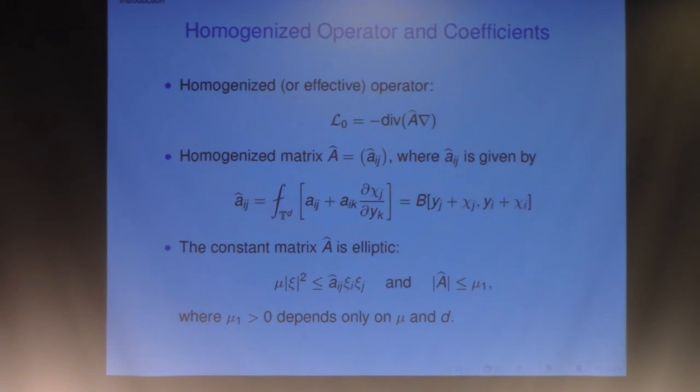You can see the coefficient for L_0 is not a simple average of the coefficient for L_y, but rather it's a kind of nonlinear average. The second term involves the corrector multiplied to the coefficient, so this is a nonlinear term. The first theorem is that this L_0 is elliptic, with the same lower bound. Â_ij ξ_i ξ_j ≥ μ|ξ|², where μ is the same ellipticity constant for A. But upper bound may be different, only depending on μ and the dimension.